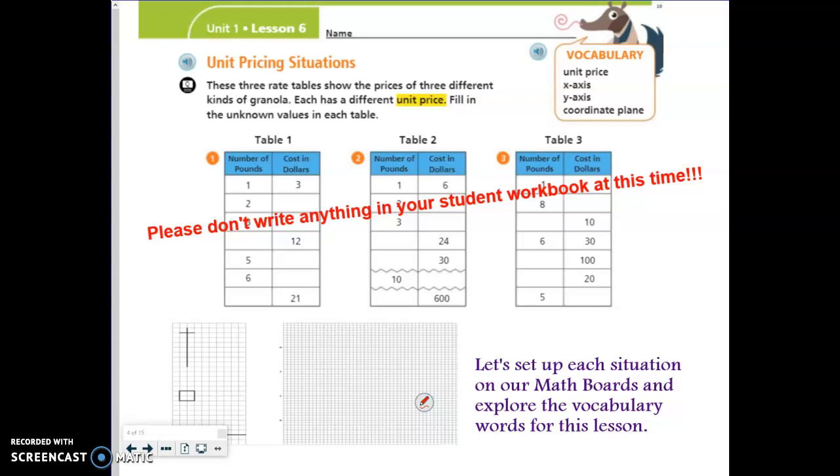All right, so the first thing we need to do is we need to understand what the term unit price means. And obviously the word price in that vocab term means that it's going to cost us something. We're going to have to pay something to buy it, or to pay something to own it. So we know that we're dealing with money. The word unit in this case, guys, means one. So if I want to go to the store and I want to buy one of something, that is going to be its unit price. Not if I'm going to buy something in bulk, not if I'm going to buy more of one thing. That will play out as we look at the tables, but when I'm trying to identify or try to find a unit price of something, I'm looking to buy just one of those things. In this case, our unit is pounds, and it's pounds of granola. So as we look at the question here, it says, these three rate tables show the prices of three different kinds of granola. Each has a different unit price. Fill in the unknown values in each table.